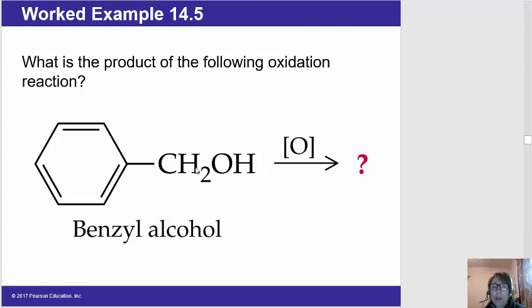So the first thing you want to do to determine the product of oxidation of any alcohol is determine whether that alcohol is primary, secondary, or tertiary. Tertiary, of course, won't get oxidized.